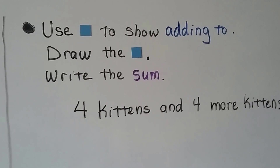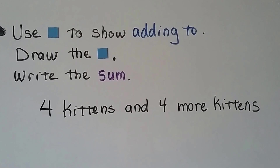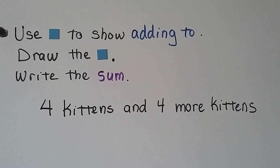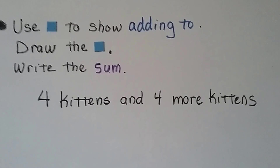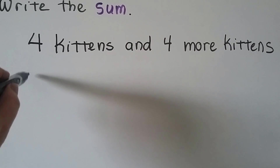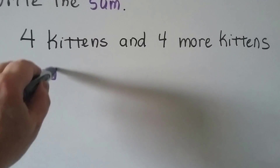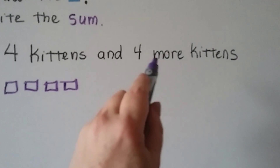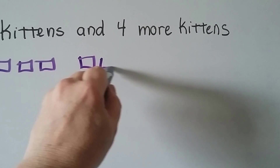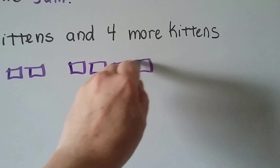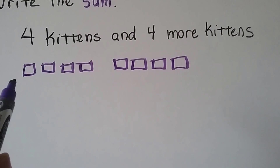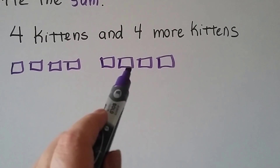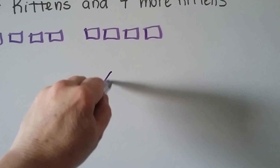Use counters to show adding to, draw the counters, and write the sum. Four kittens and four more kittens. We draw a counter for each kitten: one, two, three, four for the first group, and one, two, three, four for the four more kittens. Now count them all together: one, two, three, four, five, six, seven, eight. Eight kittens.